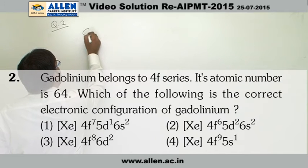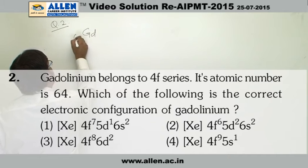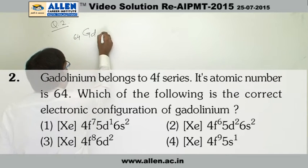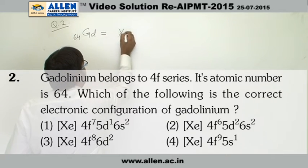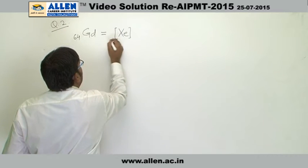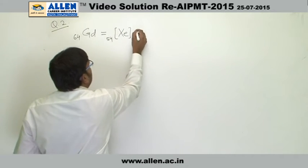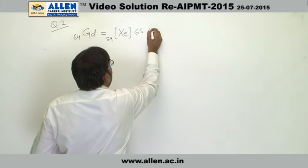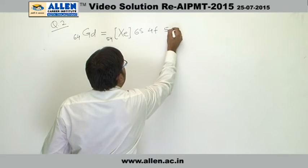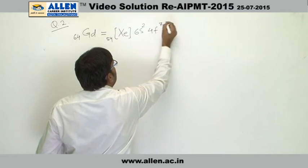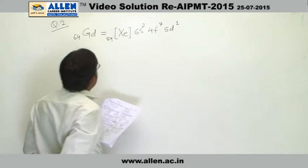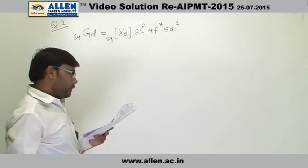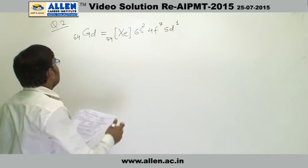Number 2, gadolinium, atomic number 64. Electronic configuration is xenon 54, then 6s2, 4f7, 5d1. This is the electronic configuration of gadolinium, means answer number 1.